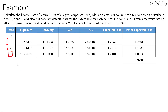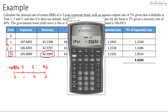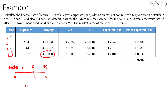Now if the bond defaults in year three, you receive the coupon for the first two years, and in the last year when it defaults you get forty-two dollars. On the timeline: you buy the bond for one hundred point six nine two one, receive five dollars in years one and two, and get forty-two dollars in year three. In the cash flow worksheet, CFO is negative one hundred point six nine two one, CF1 is five with frequency set to two to replicate the two coupons, and CF2 is forty-two. Computing IRR gives negative twenty-one point three three percent.